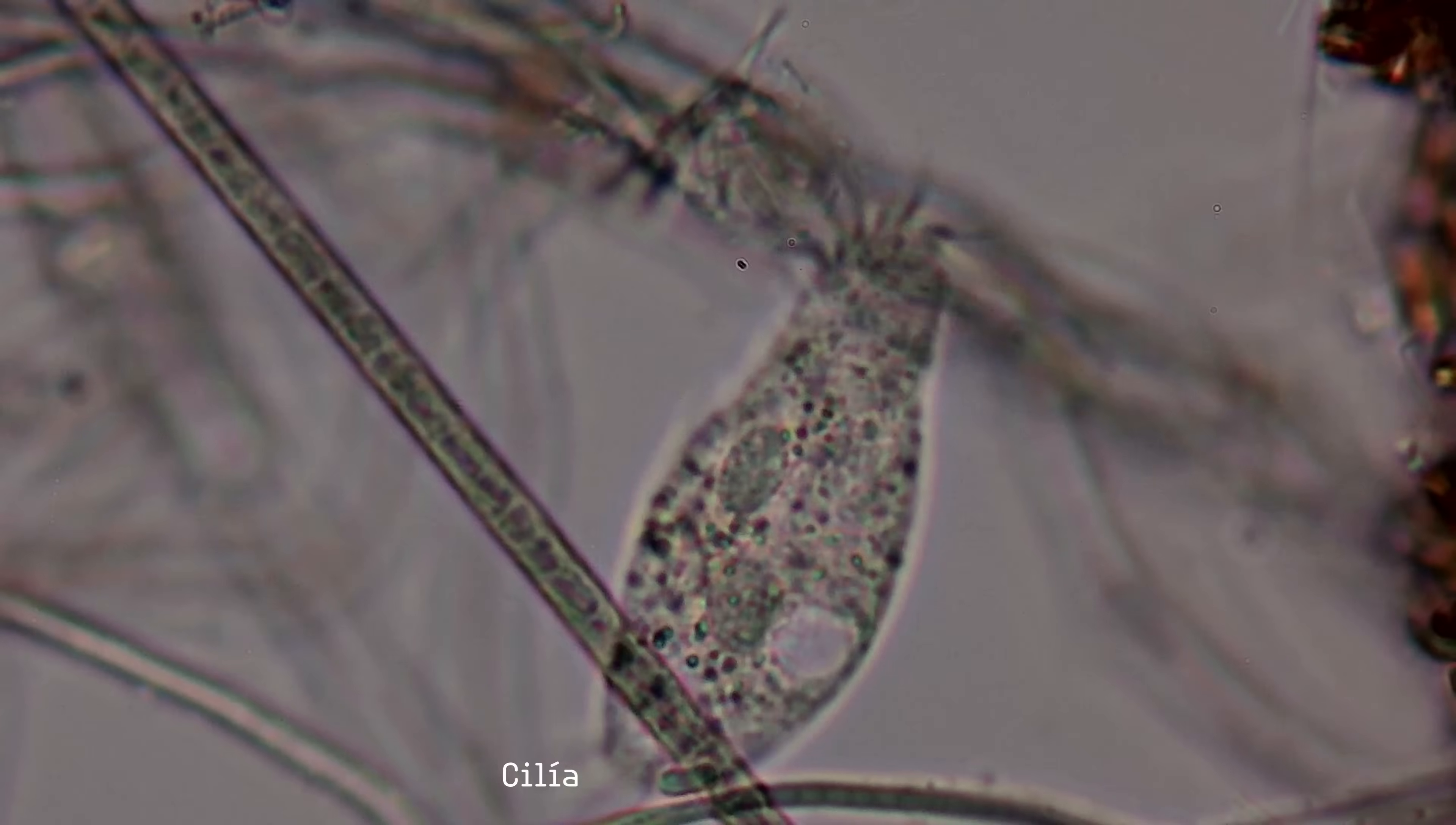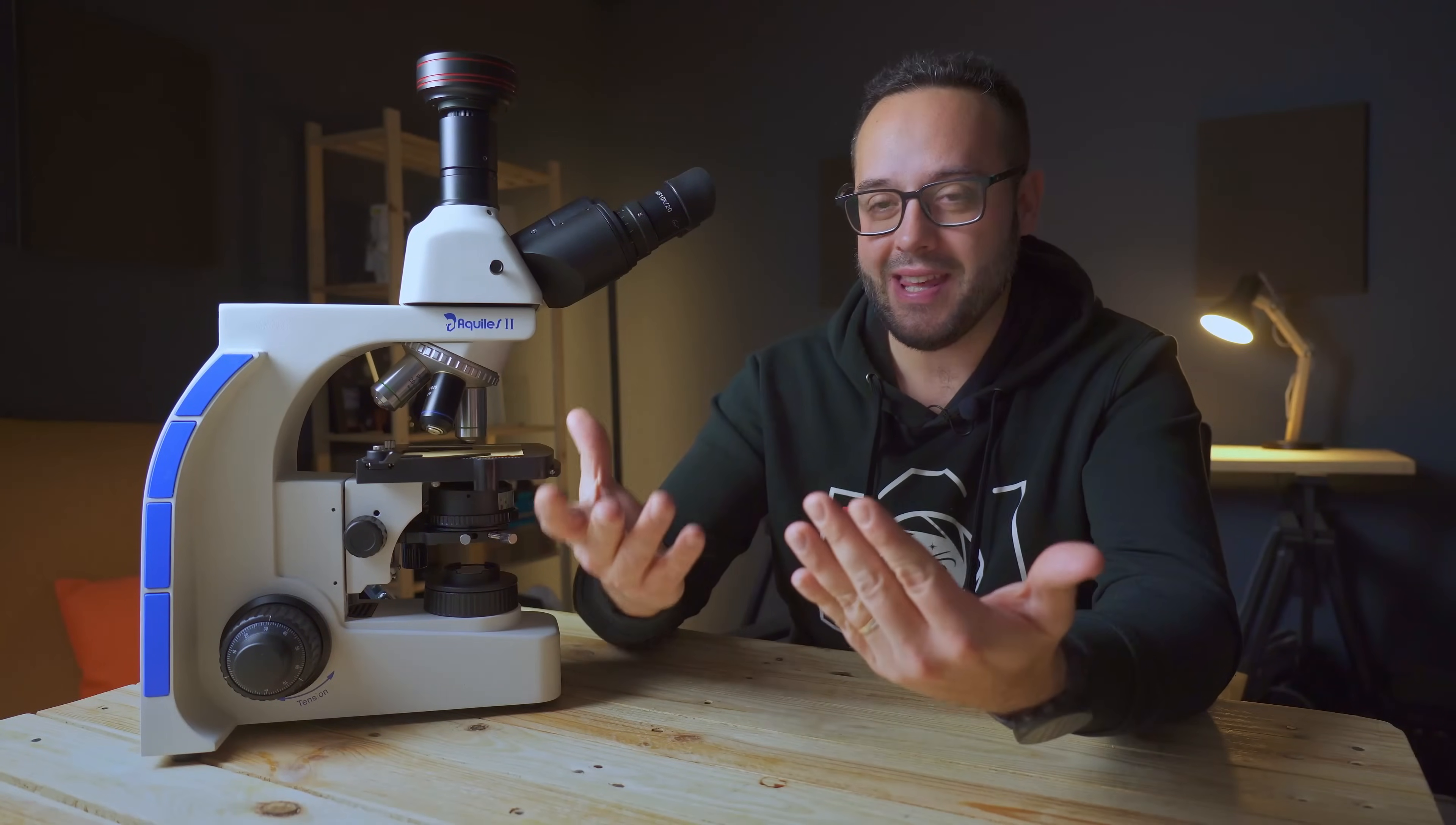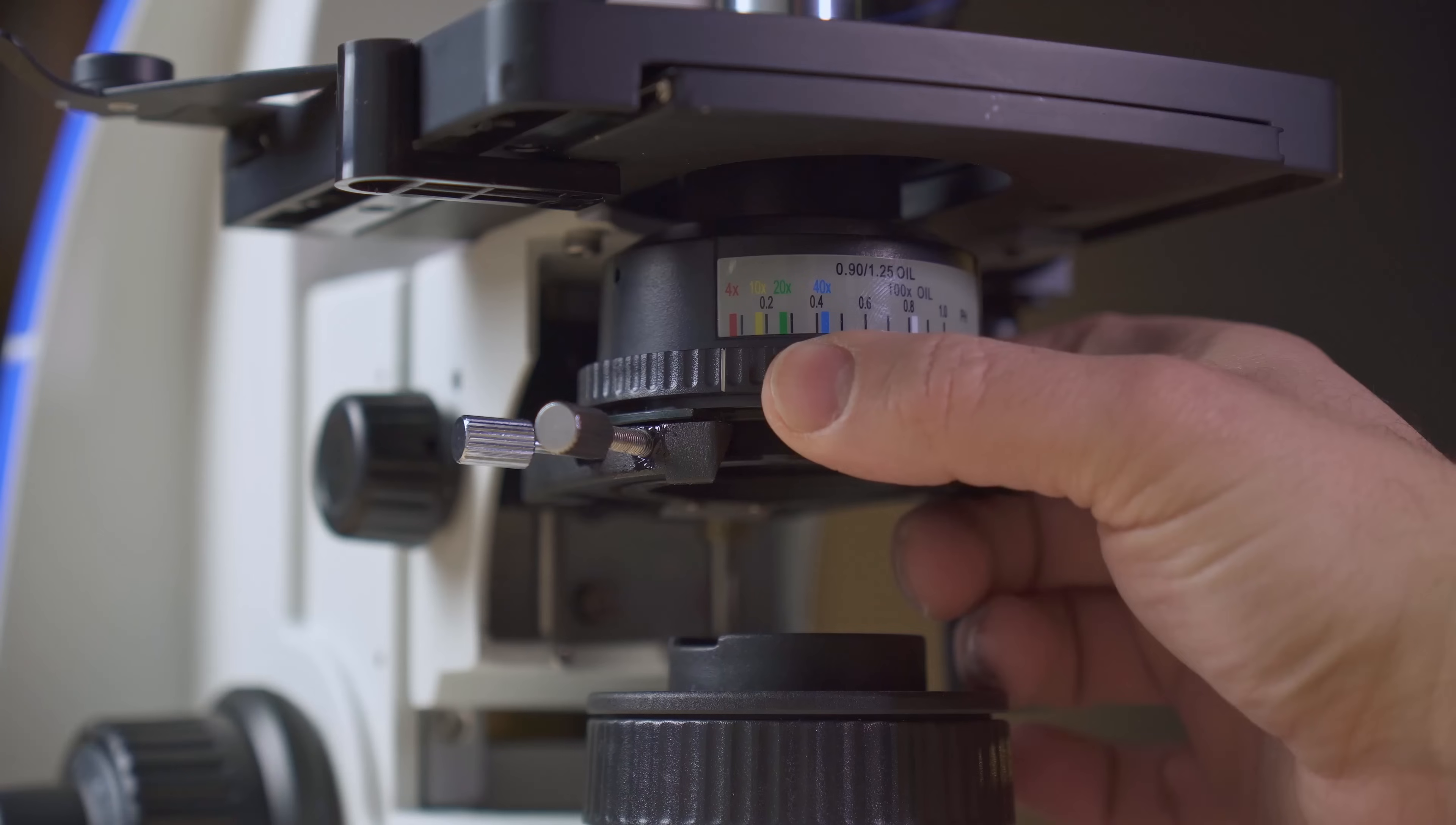In addition to bright field microphotography, which is the most common and best known in the world of microscopy, this microscope also has a phase condenser. Basically, this element that functions as a kind of diaphragm and is right here, allows us to practice microscopy and microphotography in phase contrast, dark field, and with oblique illumination.